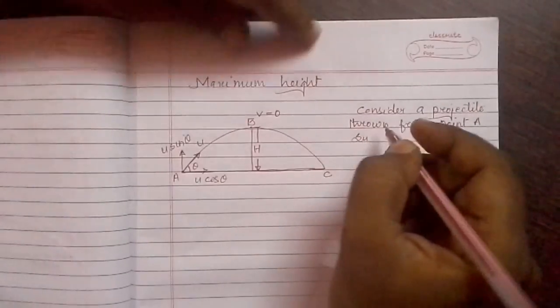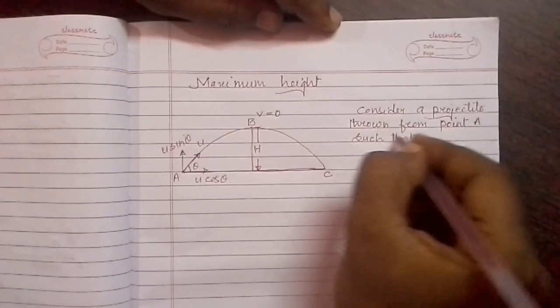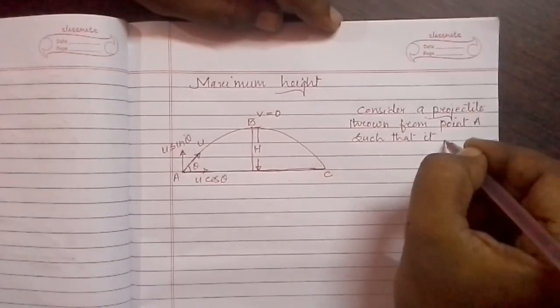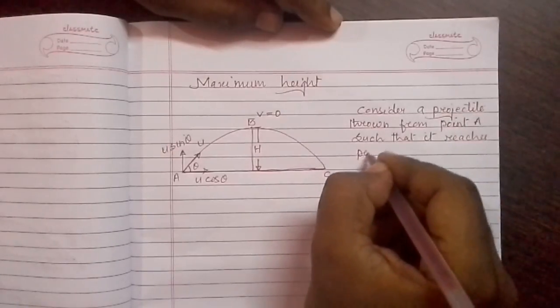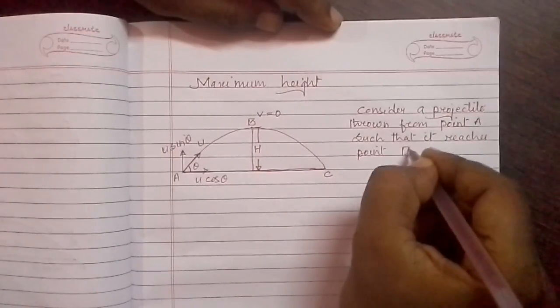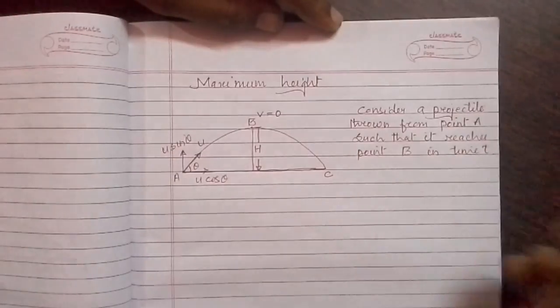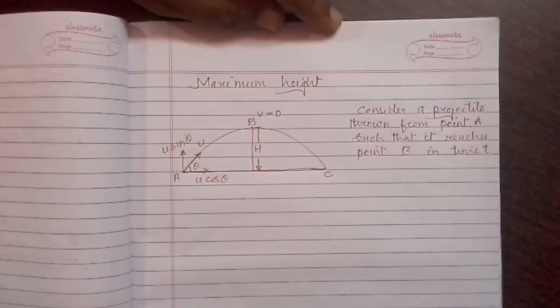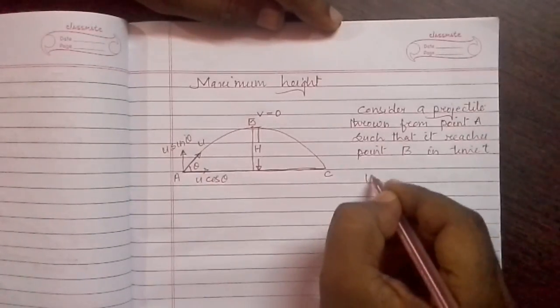The projectile reaches point B in time t, where time t is the time of flight. Let B be the highest point, and let that height be h.